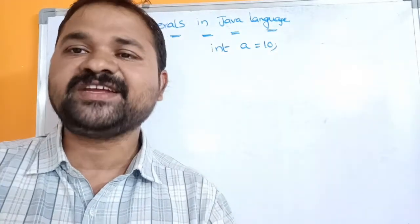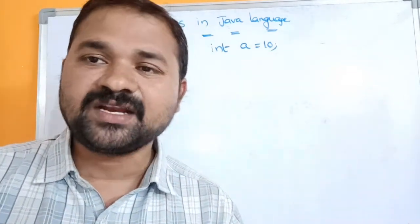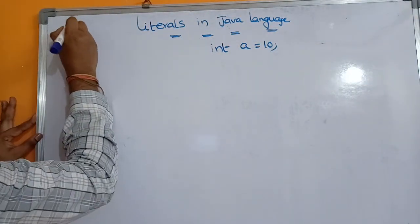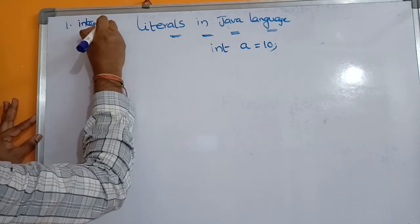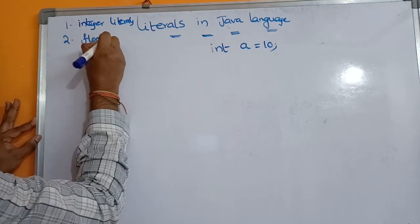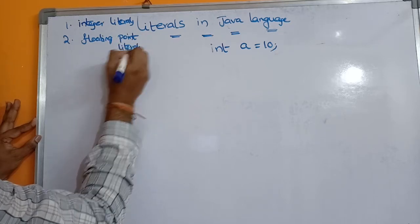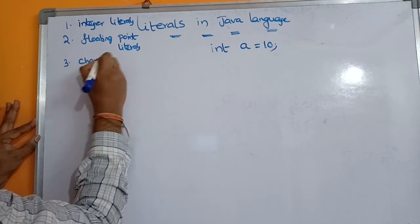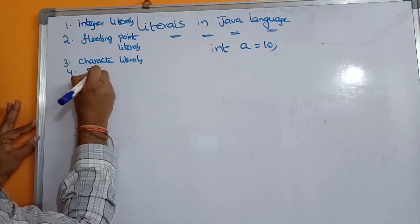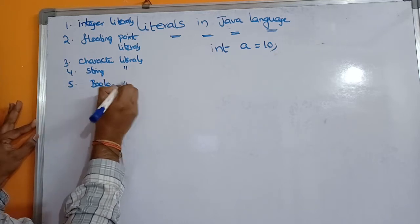Literals are mainly classified into five types: first, integer literal; second, floating point literal; third, character literal; fourth, string literal; fifth, boolean literal. In this video we will discuss all these literals.